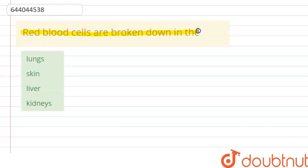The question here is that red blood cells are broken down in the lungs, liver, skin or the kidney. The correct answer is the liver. If we talk about the RBCs, that means we are talking about the erythrocytes.